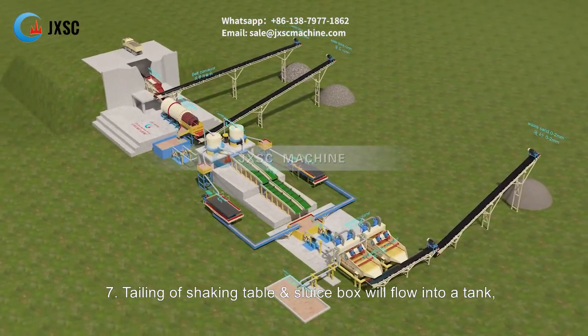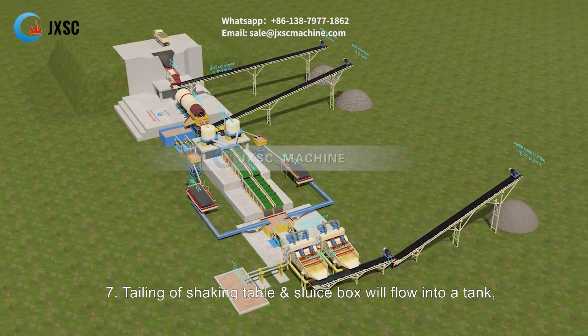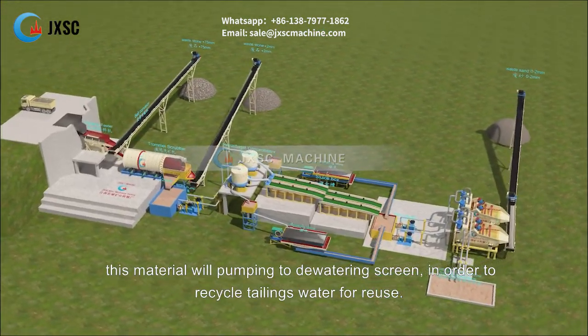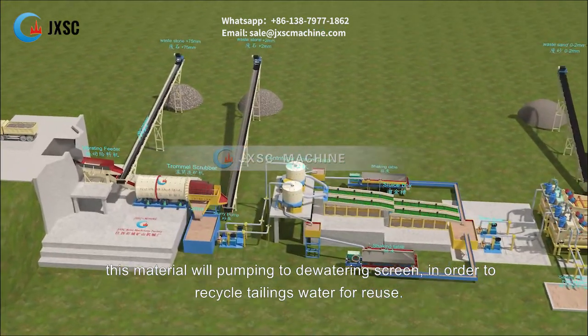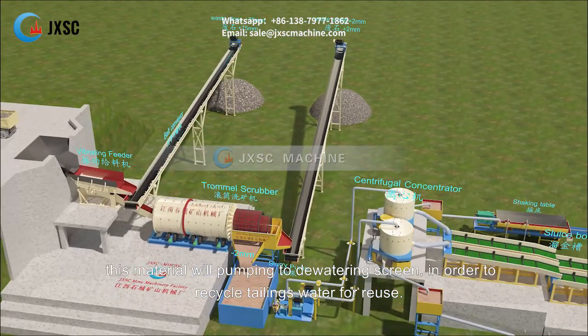Step 7: Tailings of the shaking table and sluice box will flow into a tank. This material will be pumped to a dewatering screen in order to recycle tailings water for reuse.